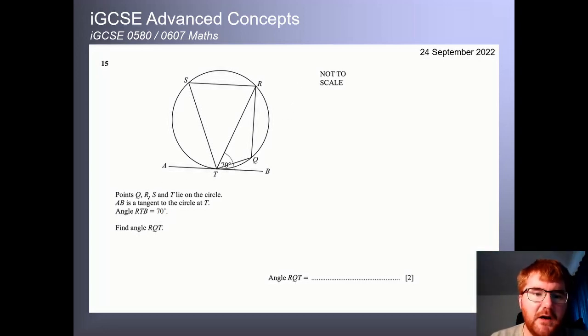I've got a nice exam question here. This is from the 0607 paper, which utilizes this kind of idea. So we've got angle RTB is equal to 70. And then we need to find RQT. We're actually looking for this angle here. And the only way you can really do this is by using the alternate segment theorem, which says that this angle here is equal to the angle subtended in the opposite segment.